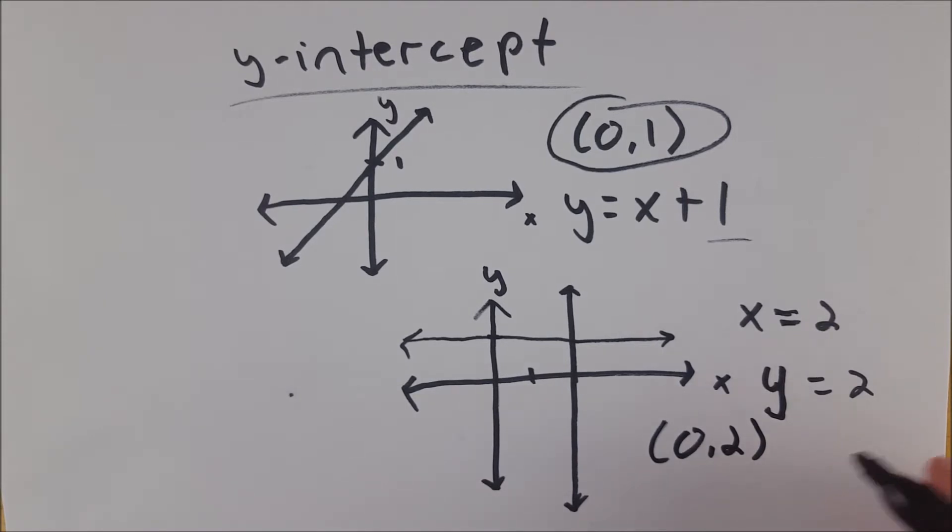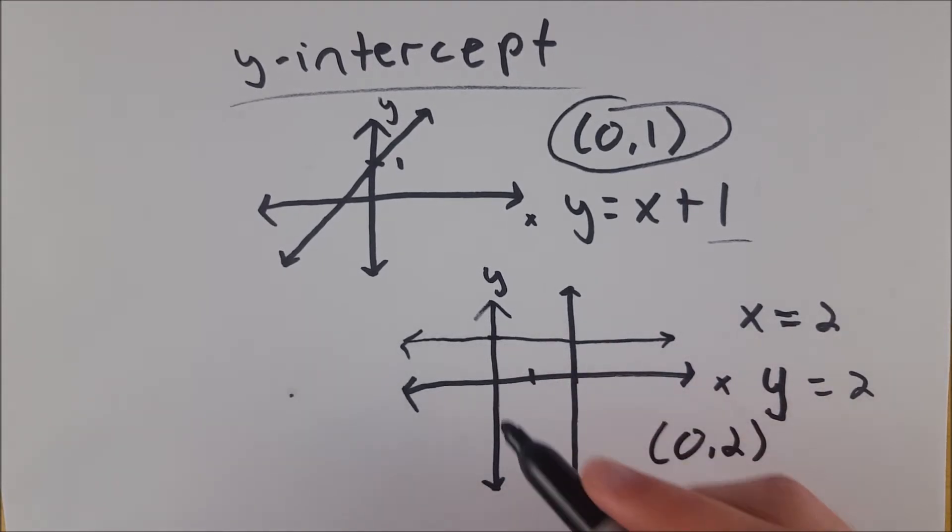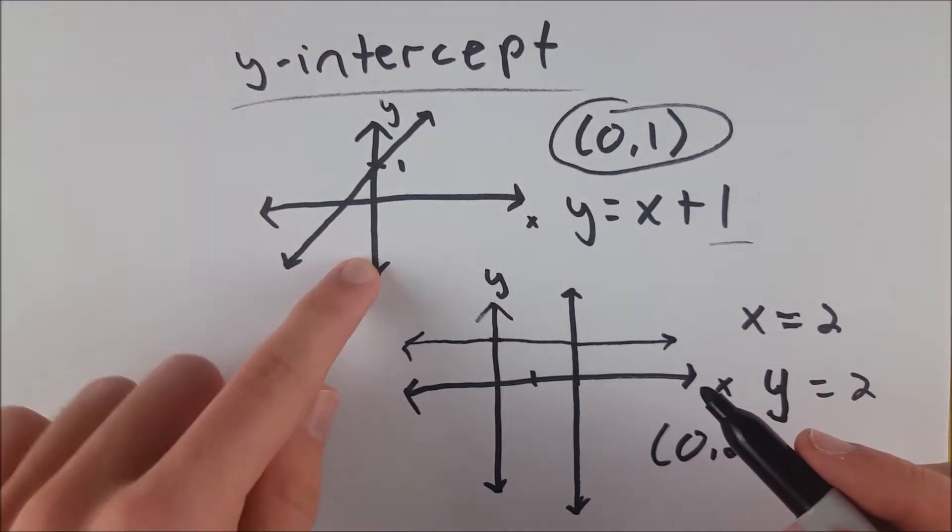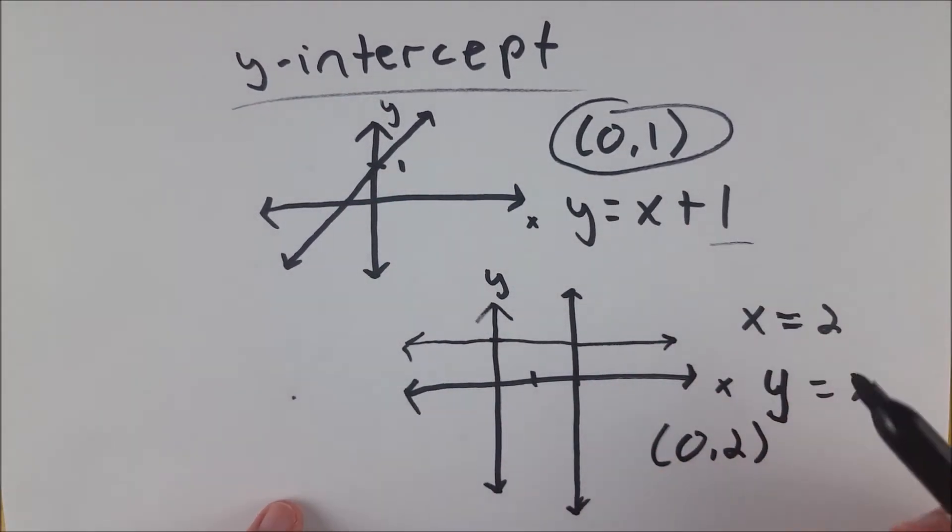So that's what a y-intercept is. It is the point on the y-axis where a linear function crosses, where a line crosses the y-axis. That's the y-intercept.